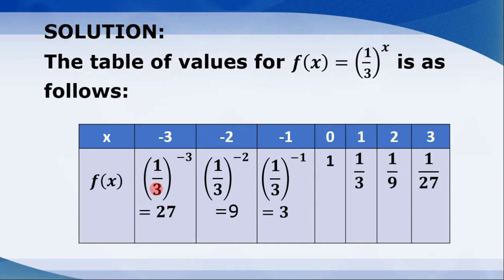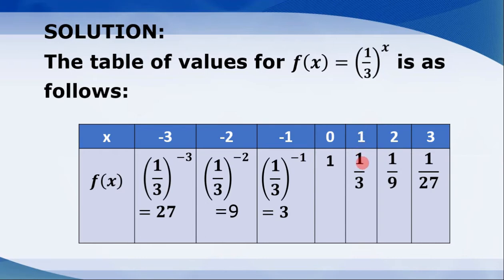Substituting x = -3, f(-3) = (1/3)^(-3) = 27. f(-2) = (1/3)^(-2) = 3^2 = 9. If x = -1, we have (1/3)^(-1) = 3^1 = 3. We have a negative exponent, so we take the reciprocal of 1/3, giving 3. Any expression raised to zero exponent is 1, so f(0) = 1. f(1) = (1/3)^1 = 1/3.